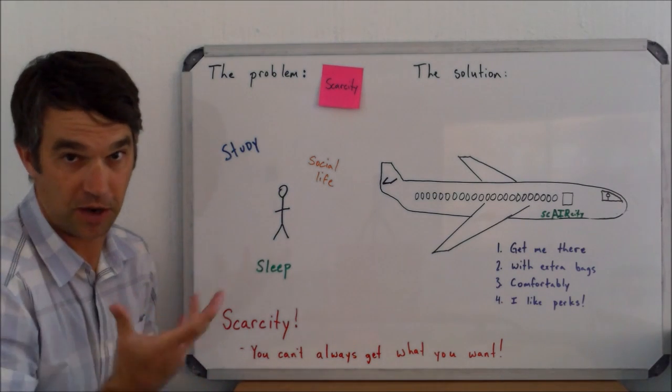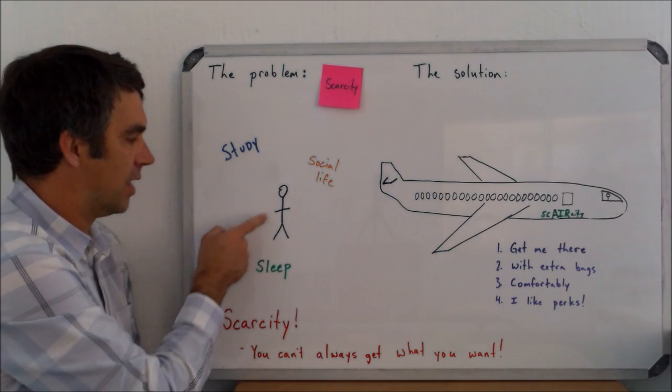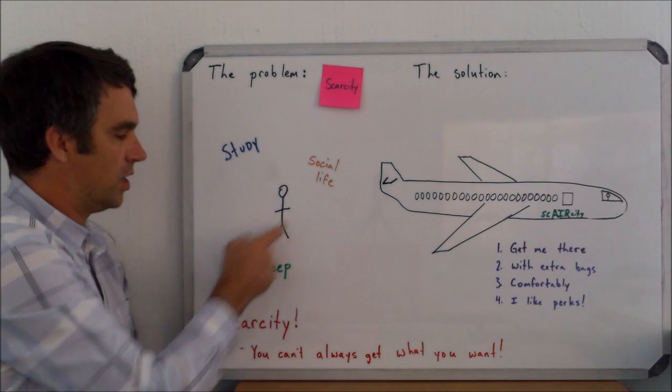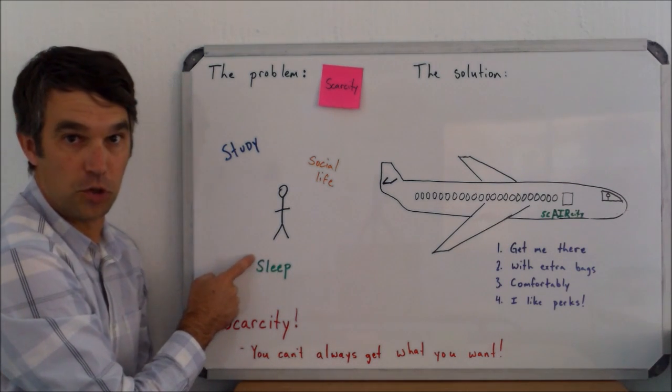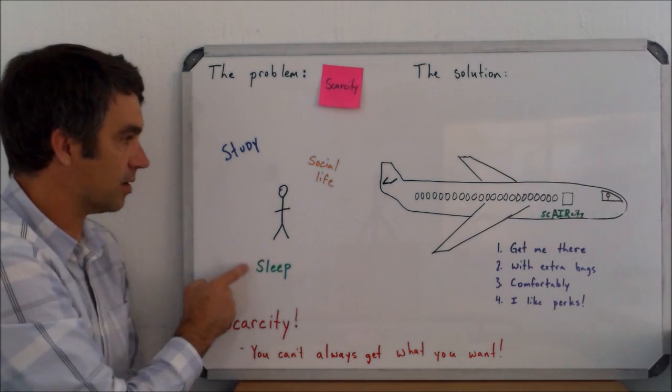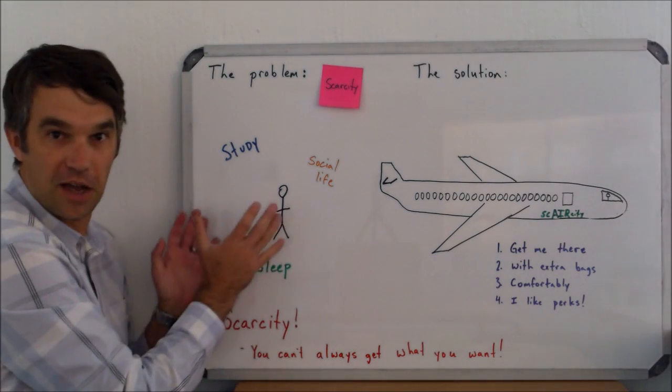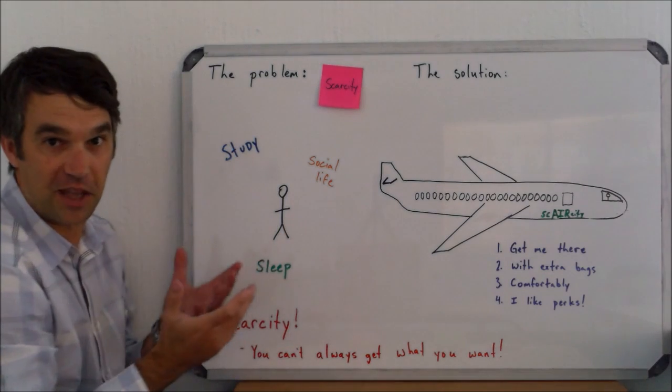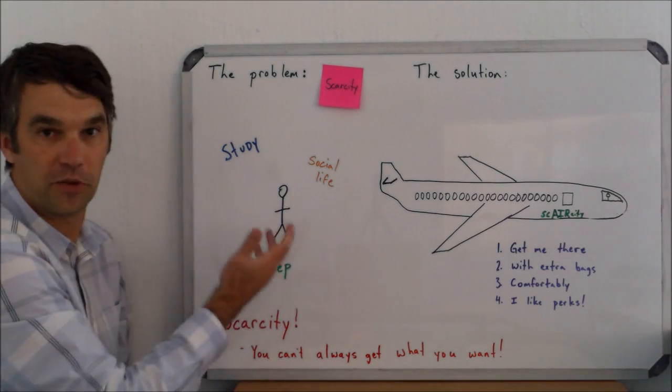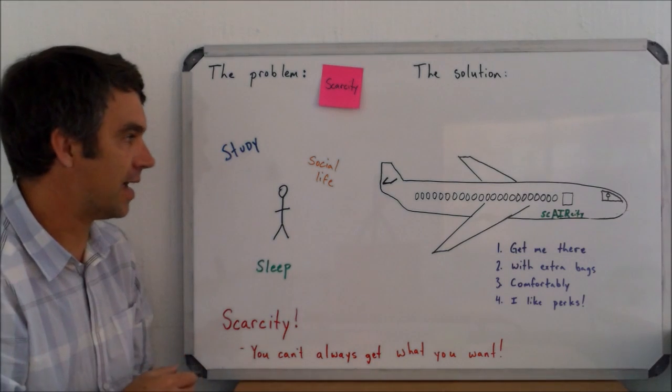A common meme in the IB program is that this is you, here are your three choices, and you can only do two of them. So, you can study, you can sleep, or you can have a social life. Well, I don't personally agree all the way with this because I think if you manage your time well, you can do all three, but that's a different issue for a different day.